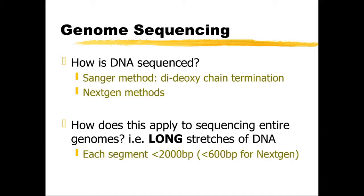So how can we apply these sorts of sequencing techniques to entire genomes — long stretches of DNA? In the Sanger-type methods, we're only able to sequence up to around about 2000 base pairs of DNA in one sequencing run. And for the next generation methods, depending on the particular method, it's generally less than 600 base pairs.